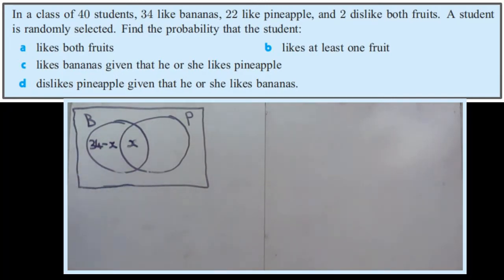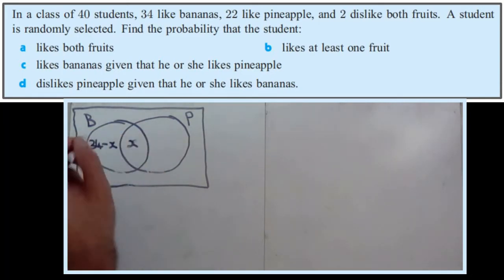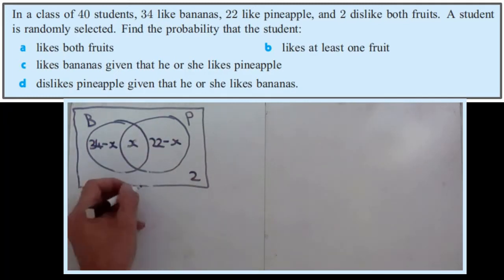Using the same approach for pineapples, 22 like pineapples. So this region here, which is the people who like pineapples but they don't like bananas, must be 22 minus X. And we know that two people dislike both, so they're not in the union.